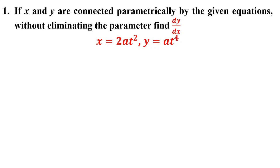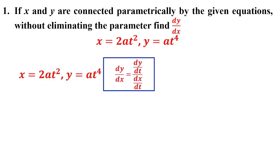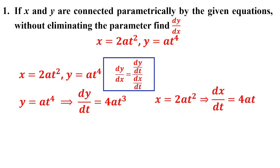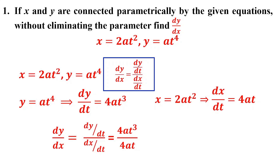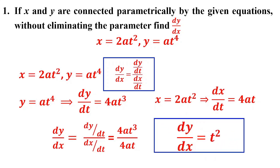Problem 1: x = 2at², y = at⁴. Find dy/dx without eliminating the parameter. dy/dx = (dy/dt) / (dx/dt). For y = at⁴, dy/dt = 4at³. For x = 2at², dx/dt = 4at. Dividing: dy/dx = 4at³ / 4at = t².